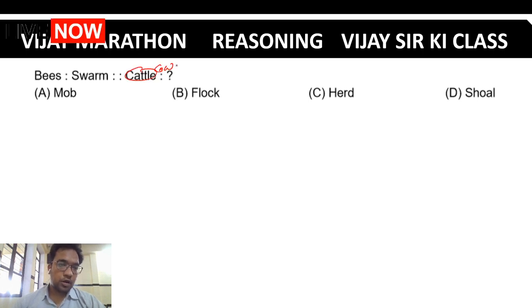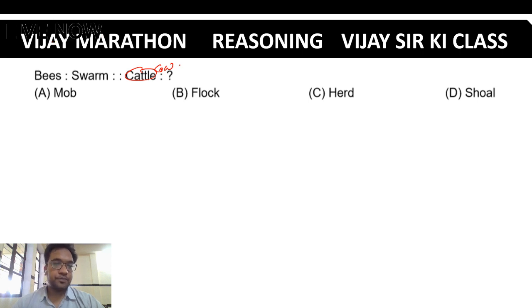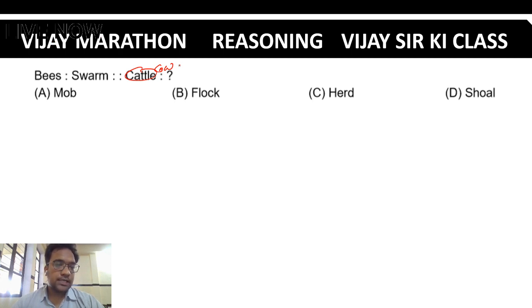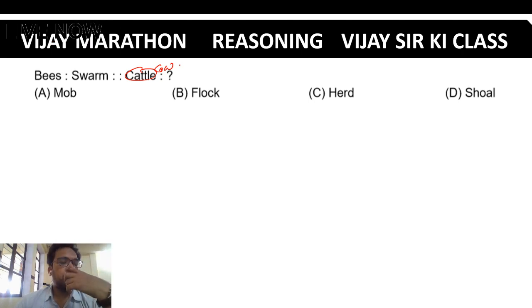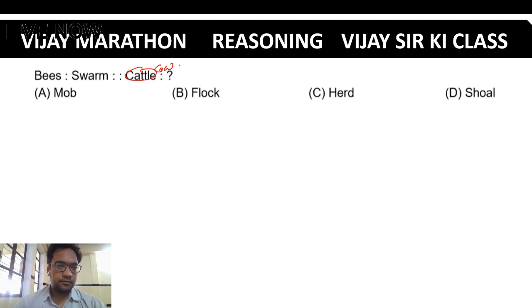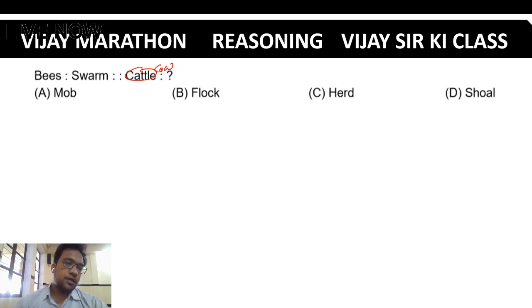Bees swamp — a group of bees is called a swarm. Similarly, what is a group of cows called? Next question follows.